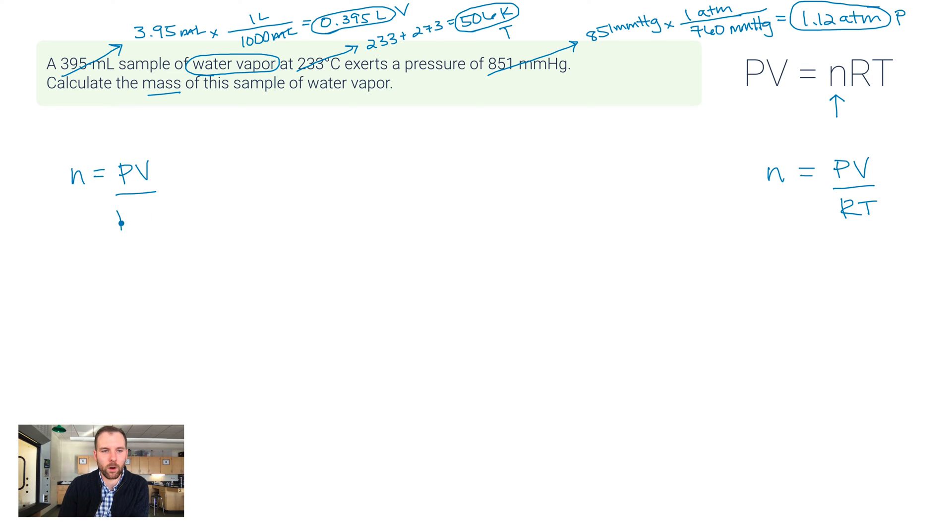And if I think about this, I'll know that moles can convert to mass as long as I know what the substance is, and in this case it tells me that it is water vapor. So I'm going to use that information in a second. Let me first rearrange this equation to solve for n. n is equal to PV over RT. Just a little algebra there. So let me use this equation to solve for n: PV over RT. I plug in, for my pressure I'm using the atmosphere version, 1.12. Volume, I'm going to use liters, so 0.395. R is 0.0821, and then the temperature, again, I want to use the Kelvin version of that, so 506.